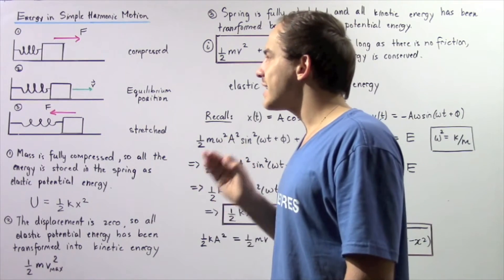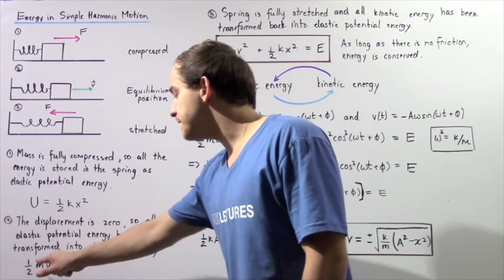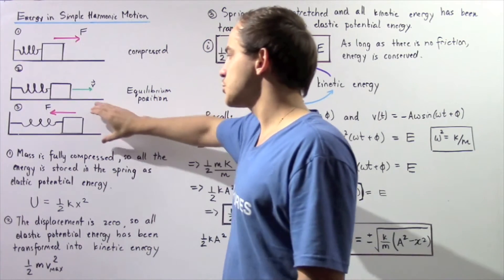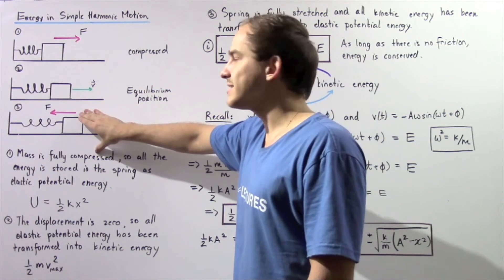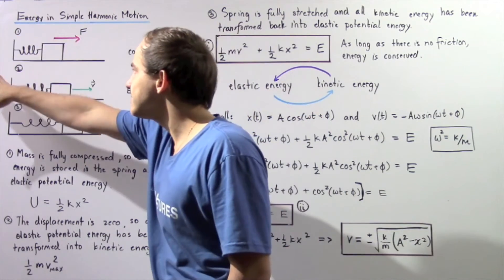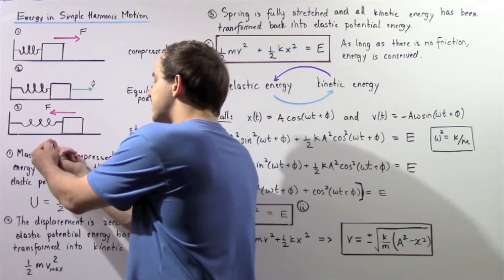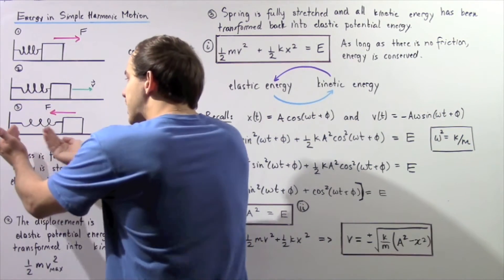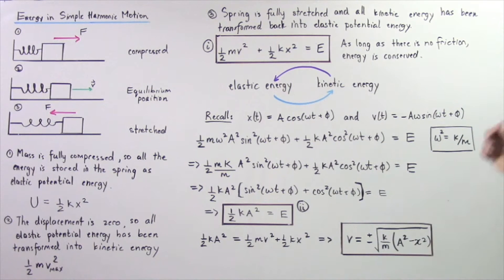To calculate the kinetic energy at the equilibrium position, we use the formula one-half mass times v-max squared, where v-max is the maximum velocity. When the object reaches the fully stretched position in diagram 3, all that kinetic energy has been transformed back into elastic potential energy. So whereas elastic converted to kinetic at equilibrium, here kinetic converts back to elastic potential, calculated again using one-half k times x squared.